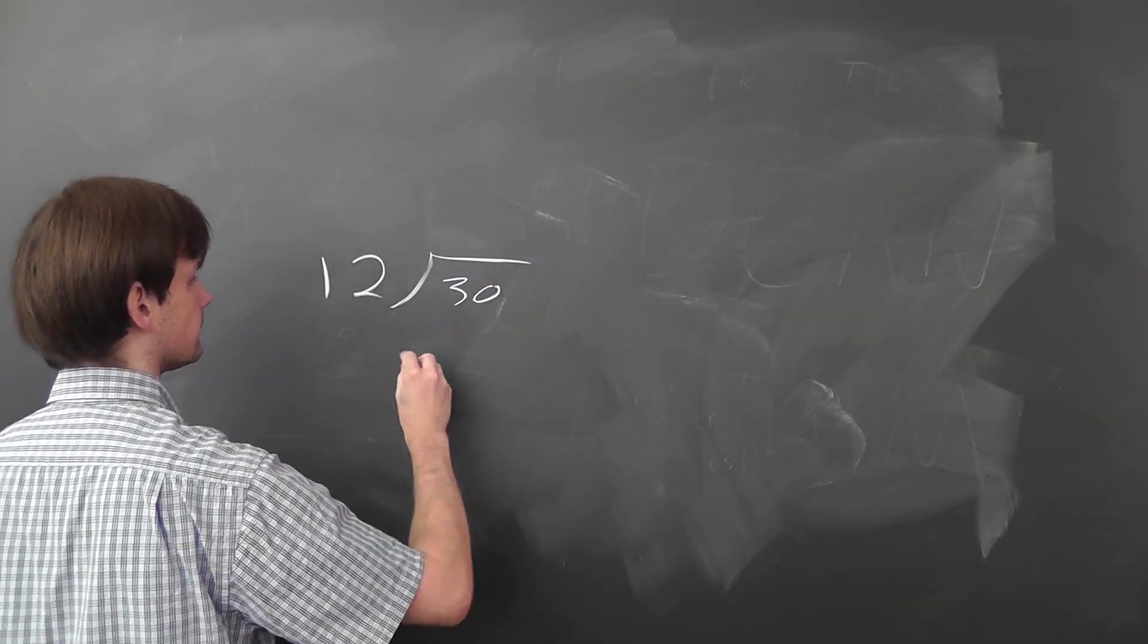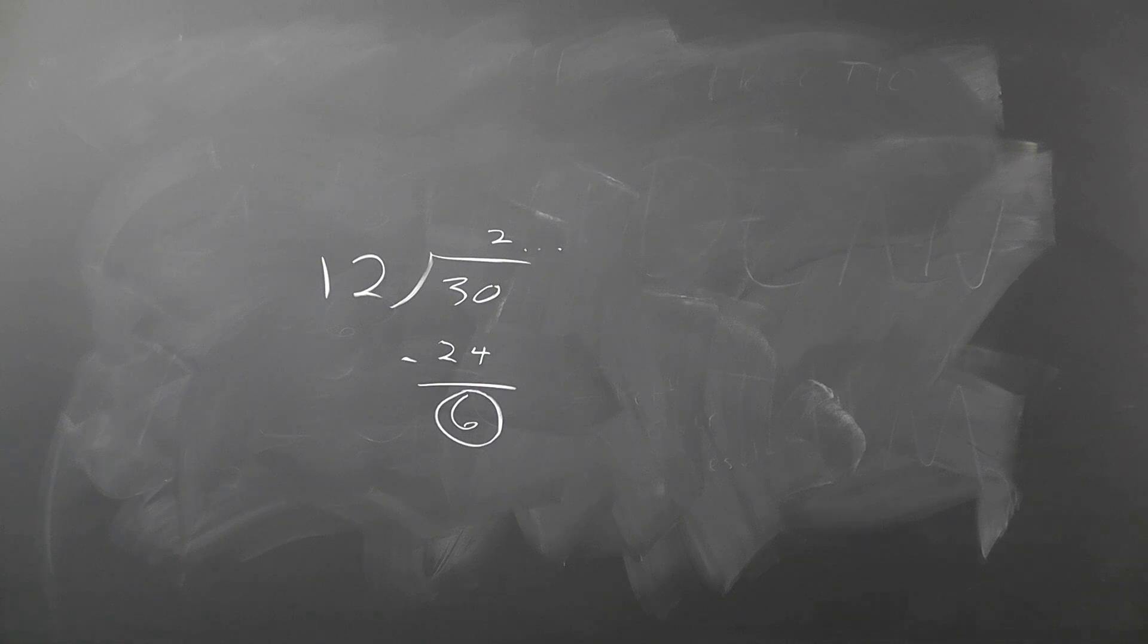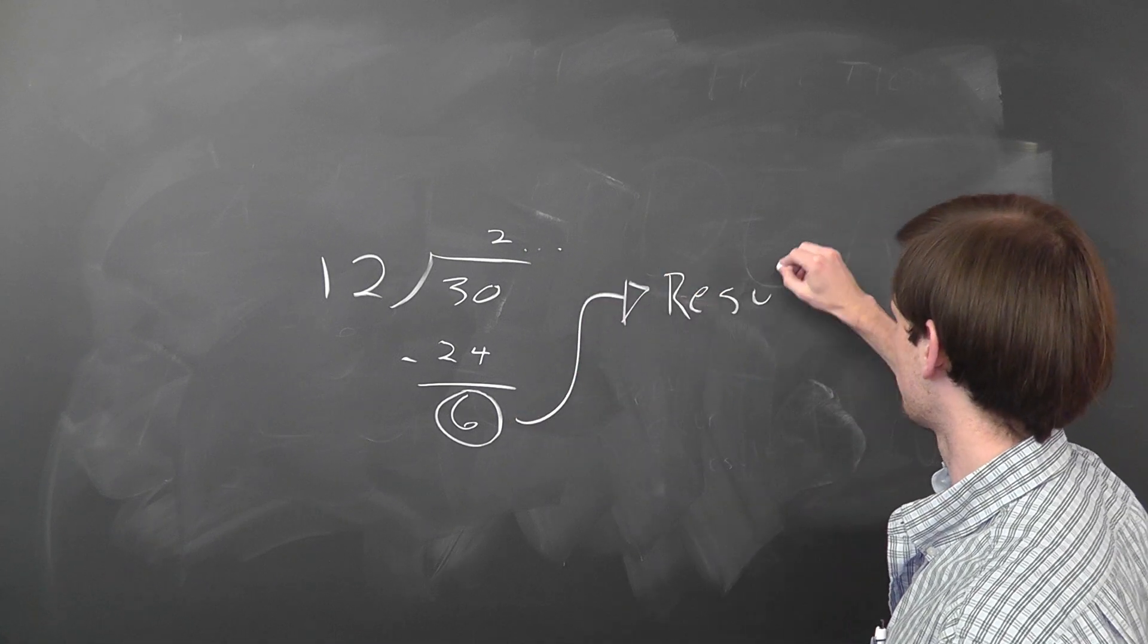Even though the subtraction-based method was the way Euclid originally envisioned, there are other ways to do it, like with division, specifically the modulus function. Now for the record, the modulus function is probably the first type of division you learned in elementary school. 12 goes into 30 two times, with a remainder of 6.